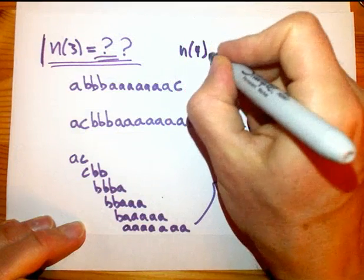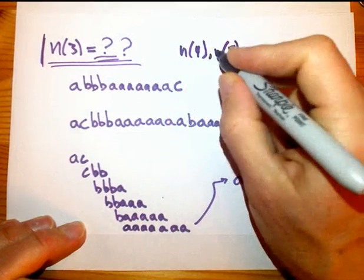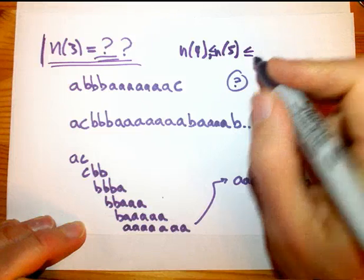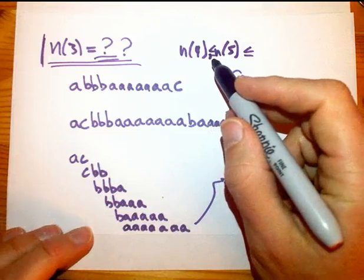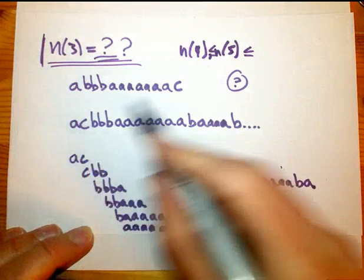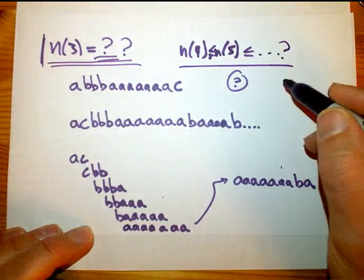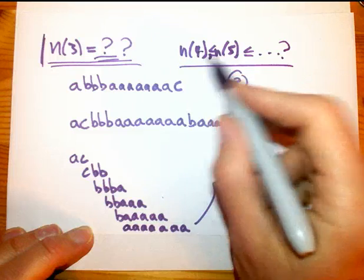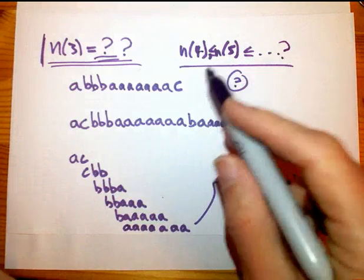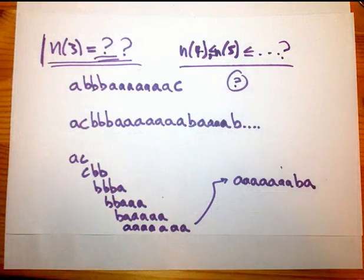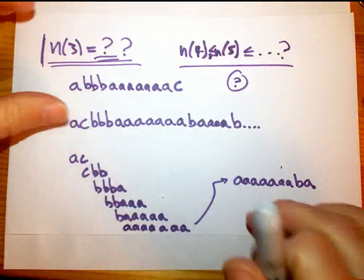And then what is N of 4? What is N of 5? These are growing, right? Less than or equal to, less than or equal to, almost certainly less than. Again, it does seem like giving more symbols gives you strictly more wiggle room. And how do these numbers grow? We still don't know if any of them are infinite. Maybe if suddenly you really can go on forever. Maybe N of 3 is infinite. We don't know. I'm going to leave that hanging. It'll be a bit of a cliffhanger.